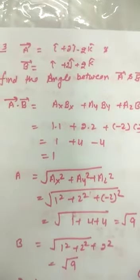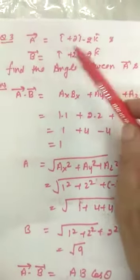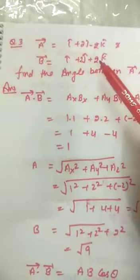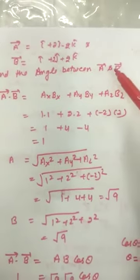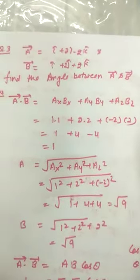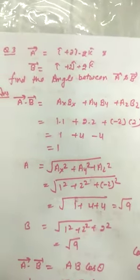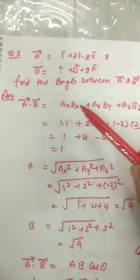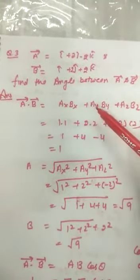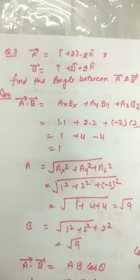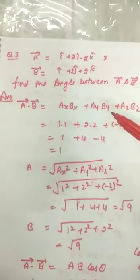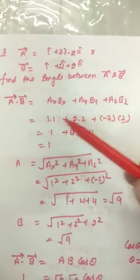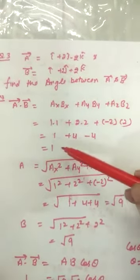Now the third numerical: given vector a and vector b, we have to find the angle between them. First we find vector a dot vector b using the same formula ax·bx plus ay·by plus az·bz, and it comes out to be 1.